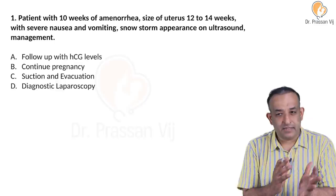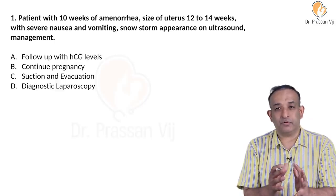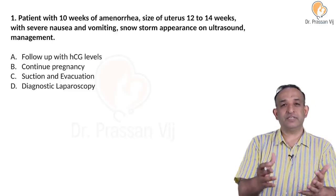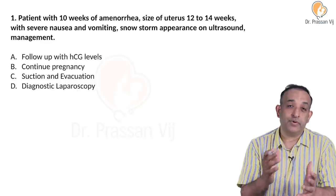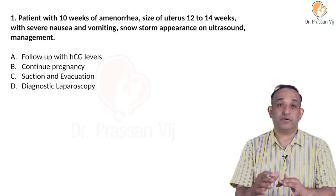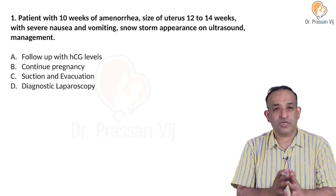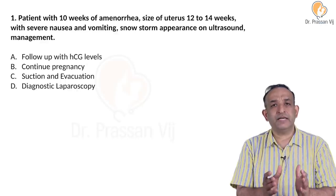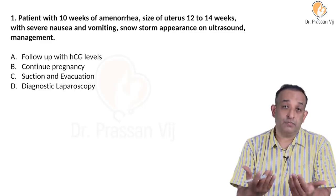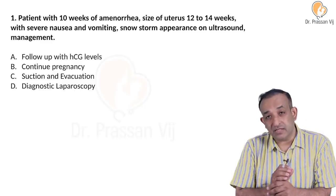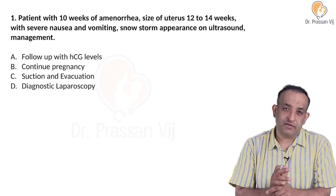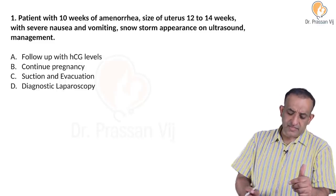A snowstorm appearance on the ultrasound - if you zoom into the picture, you can imagine it is a dark night and it is snowing. This snowstorm appearance is suggestive of a vesicular mole. When we say vesicular mole, whatever size of uterus they tell you, there is only one answer: suction and evacuation. Do not get perturbed by the size - sometimes they will tell you the uterus is 28 week size. The answer is suction and evacuation.